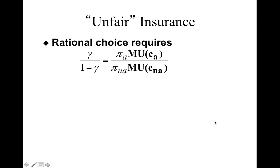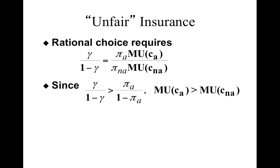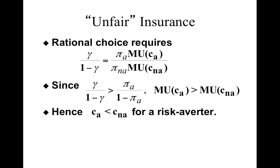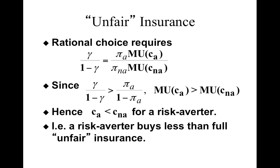This means the ratio γ/(1−γ), which represents the slope of the budget constraint, is greater than the ratio of the accident probability to the no-accident probability. But rational choice still requires the optimality condition to be satisfied. The only way that can be satisfied — when γ/(1−γ) exceeds πa/πna — is if the marginal utility from consumption in the accident state is greater than from the non-accident state, which for a risk-averse person means the consumption level in the accident state is lower than in the non-accident state. Given unfair insurance, a risk averter will always optimally choose to buy less than full insurance.